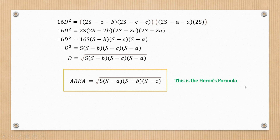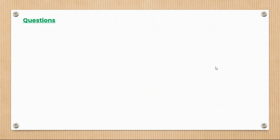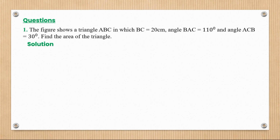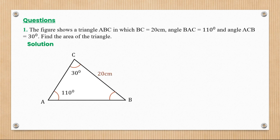Heron's formula is helpful for solving all kinds of triangles, even when no angle is given at all. Now let's look at question number one. We are told the figure shows triangle ABC in which BC is 20 centimeters, angle ABC is 110 degrees, and angle BCA is 30 degrees. We need to find the area of the triangle. Since we don't know the base or height directly, we first use the sine rule.